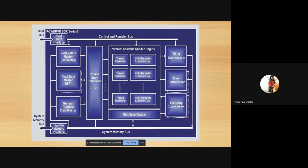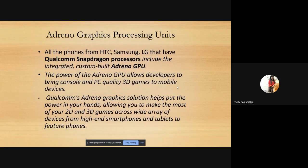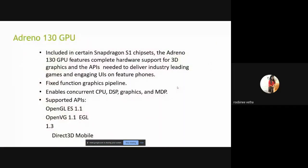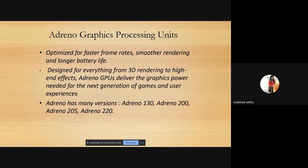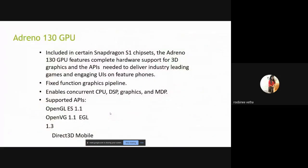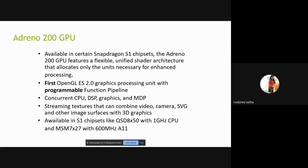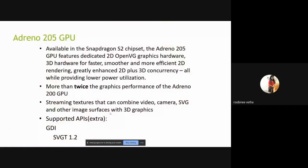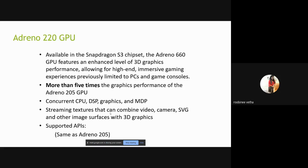The Power VR architecture has a pixel coprocessor. Coming to the Adreno GPU series: originating from 130, 200, 205, 220, and now at Adreno 660. Adreno 130 has 1.3 GHz clock frequency; Adreno 200 has 1.5 GHz; Adreno 660 has 3 GHz. Adreno 660 performs many graphical processing functions in your mobile phone.